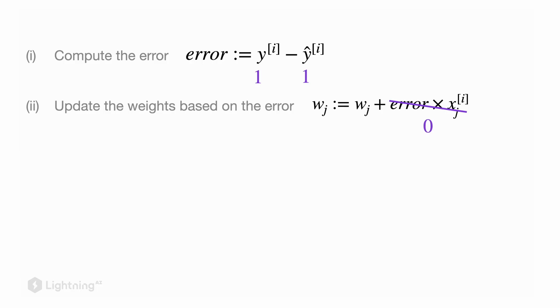Let's take a look at another example where the true class label is one and the predicted class label is also one. In this case again we don't make any error because the predicted label matches the true label, so again in this case there is no weight update.